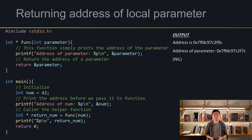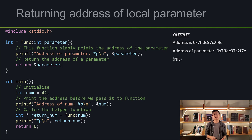In main, I initialize a variable called num. After that, I'm printing out the address of num, and then I call the helper function. It returns an int pointer — the reason I did that is so I can print out the address of the return value. After that, I printed it out, and now let's look at the output.